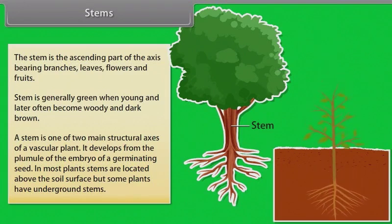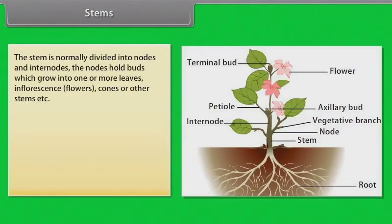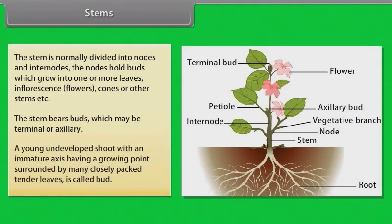In most plants, stems are located above the soil surface, but some plants have underground stems as well. The stem is normally divided into nodes and internodes. The nodes hold buds which grow into one or more leaves, inflorescence, flowers, cones or other stems. The stem bears buds which may be terminal or axillary. A young undeveloped shoot with an immature axis having a growing point surrounded by many closely packed tender leaves is called a bud.